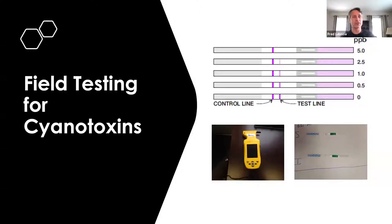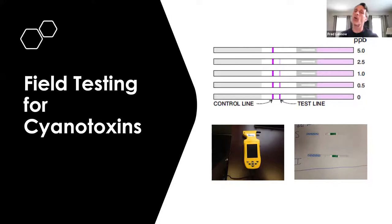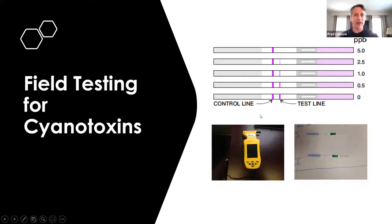We do use some field testing for cyanotoxins. We use the Abraxis field kits — we use these primarily like the canary in the coal mine, to see whether or not the compounds are present. Once we detect the compound, we may recommend that the drinking water facility or recreational lake grab a sample and send it to a laboratory for analysis. Over the last four years we've had maybe a handful of false positives. We use them primarily for presence or absence, and they tend to be very valuable in that capacity.